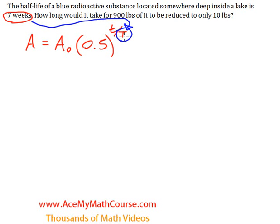So the big T is seven, not the little t. The little t is what we want to find out because they're asking how long would it take for 900 pounds to be reduced to only 10 pounds.